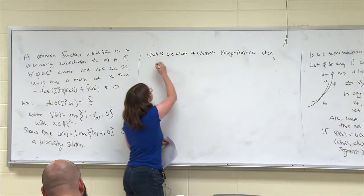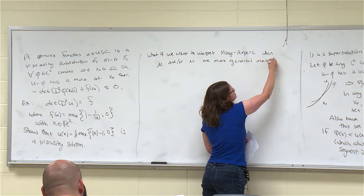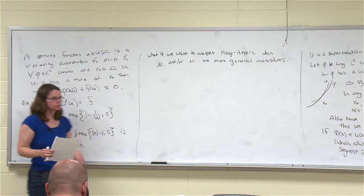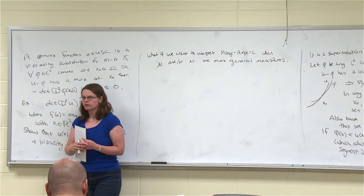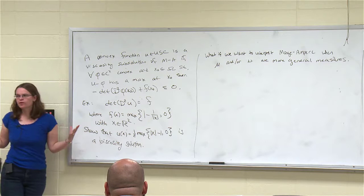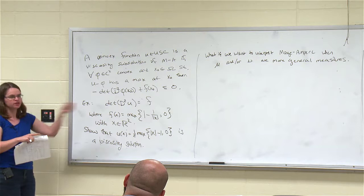The question is: what if we want to interpret Monge-Ampère when the data are actually genuinely measures — when mu or nu are more general measures? Usually with Monge-Ampère we solve the PDE, get a solution u, and the gradient of u is a mapping. But working with more general measures like Dirac masses may require mass to split — one mine may need to ship to multiple factories. So we need to let mass split.